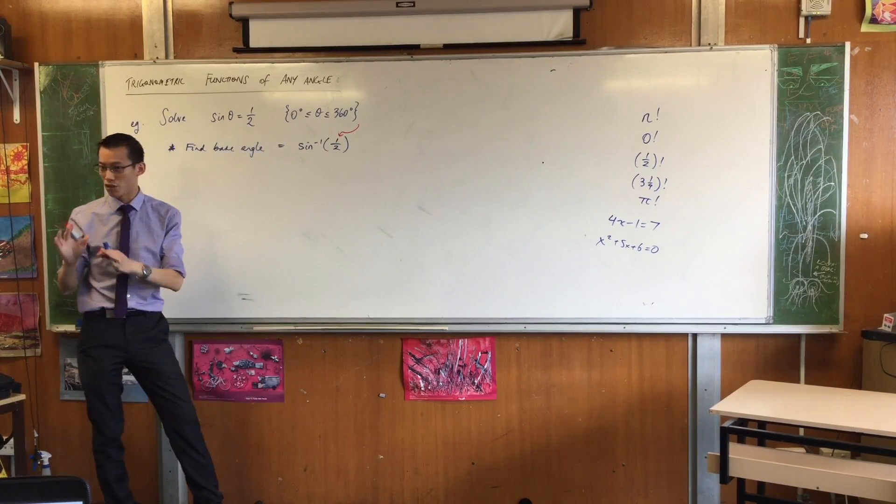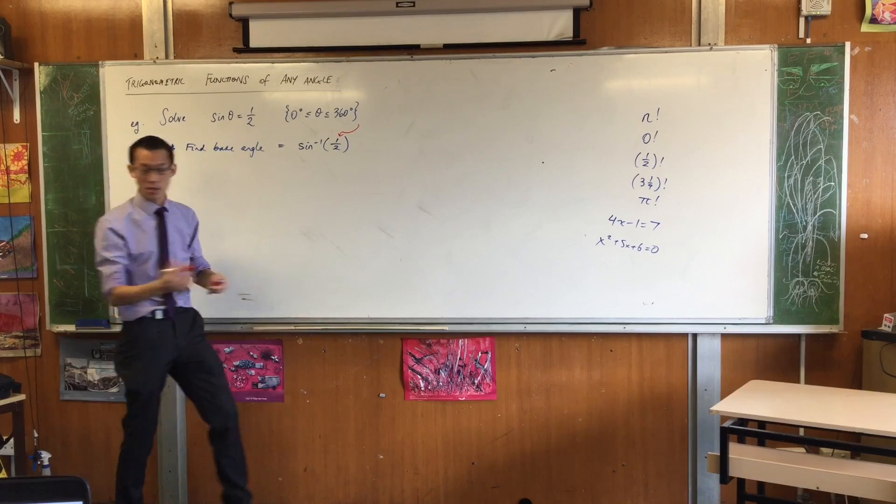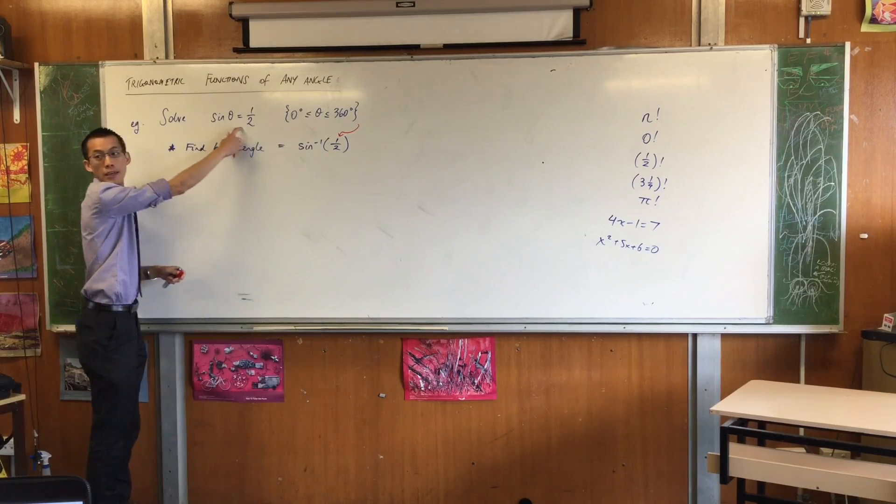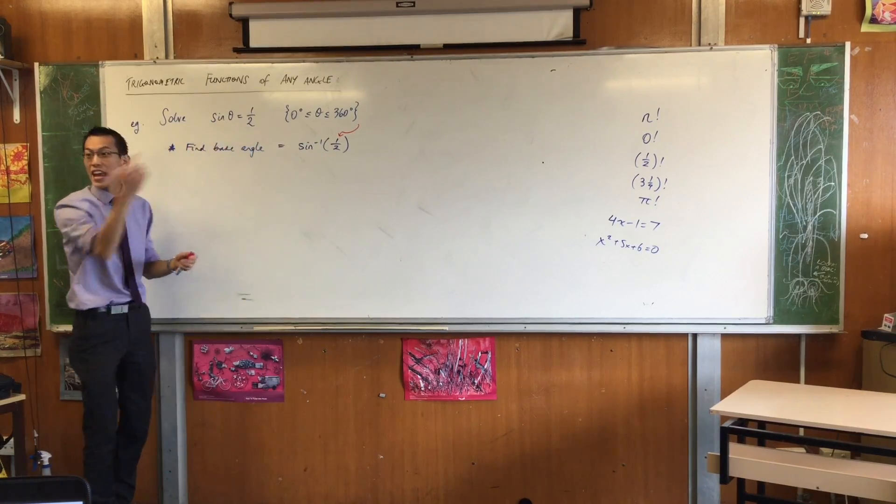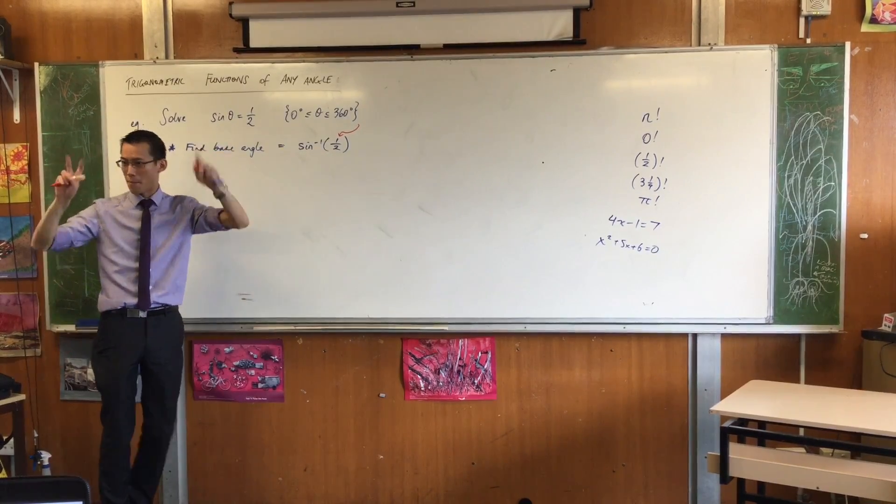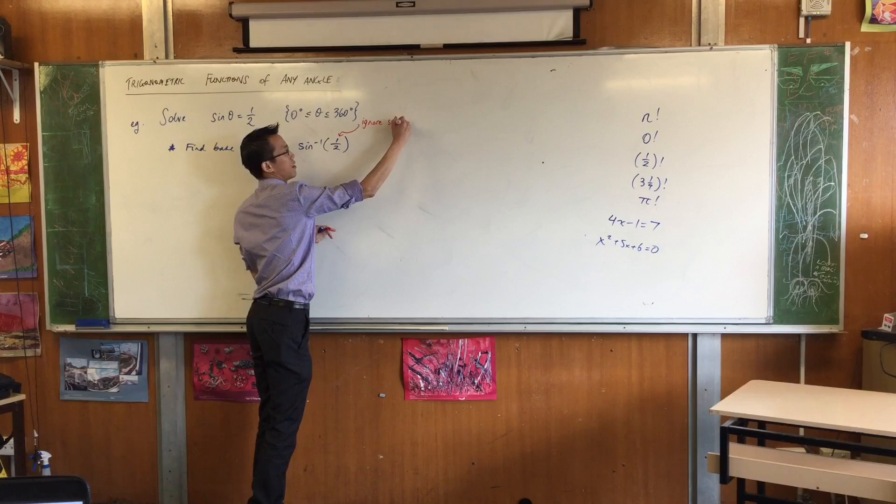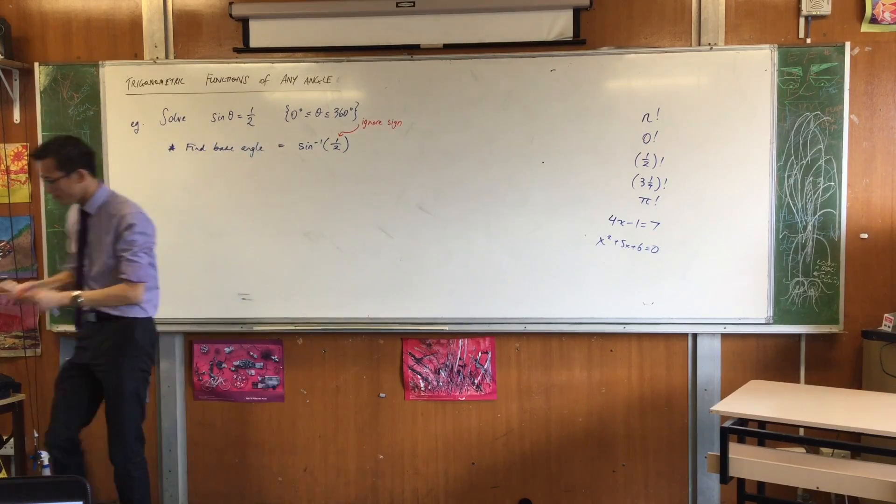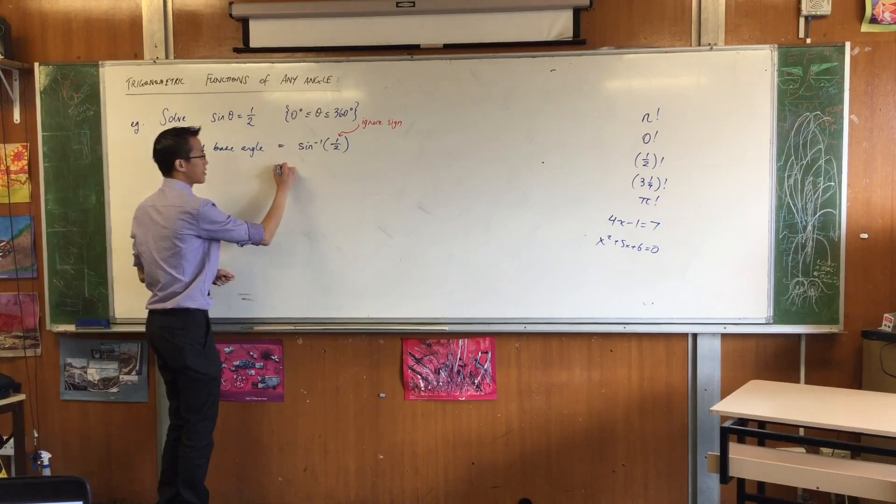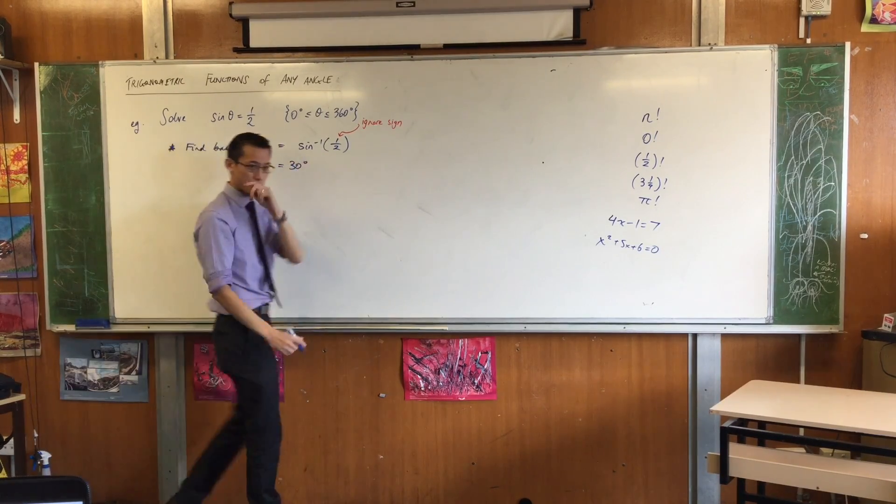Okay, so this guy down here, I want you to know, ignore the sign, right? So, if, for example, I had up here, sine theta equals negative a half, I would still put in this to find my base angle. Okay, so I'm just going to write here, and you should as well. Ignore the sign, and then that does hand back to you 30 degrees. Okay.